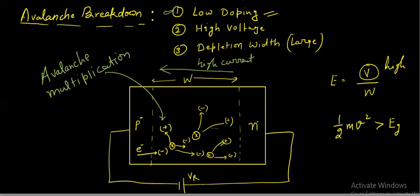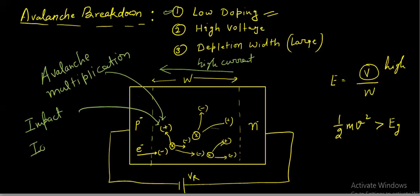So low doping gives a large depletion width, and the phenomenon occurring here is avalanche multiplication. This phenomenon is also called impact ionization — because one electron impacts another and causes ionization. In Zener breakdown, it was called field ionization. Comparing: in Zener breakdown — tunneling and field ionization; in avalanche breakdown — avalanche multiplication and impact ionization.